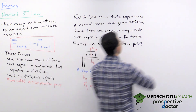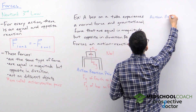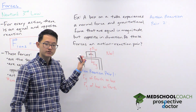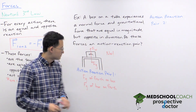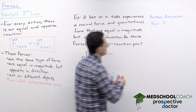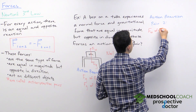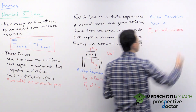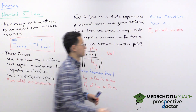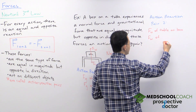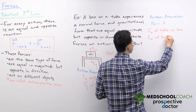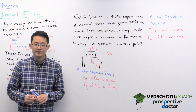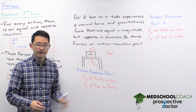For action-reaction pair number two, consider the normal force. The normal force is acting on the box and is being exerted by the table. So you have the normal force of the table acting on the box. Therefore, the pair must also be a normal force in the opposite direction: the box exerting its normal force on the table. Those are a couple of examples of action-reaction pairs that follow Newton's Third Law.